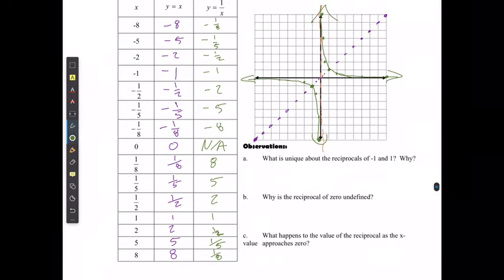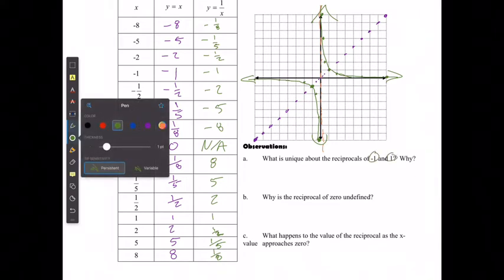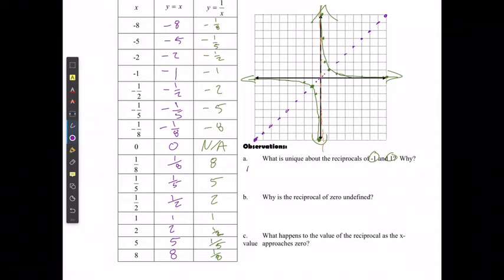So what is unique about the reciprocals of negative 1 and positive 1? Well, for negative 1 and positive 1, the reciprocal of negative 1 is equal to negative 1 over 1, which is still equal to negative 1. The reciprocal of positive 1 is equal to 1 over 1, which is once again going to work out to be 1.